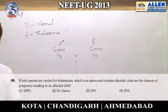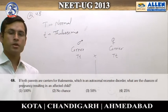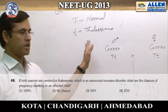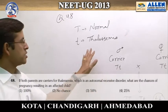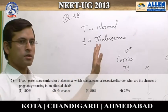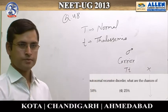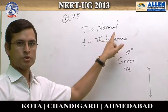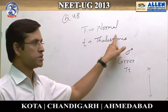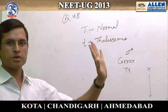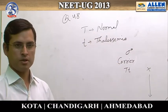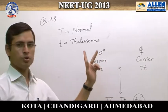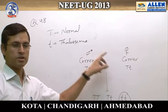In question number 48, we are given the disease thalassemia. Thalassemia is an autosomal recessive disorder, so the dominant allele produces the normal condition while the recessive allele produces the disease thalassemia. In this question, both of the parents are carriers.